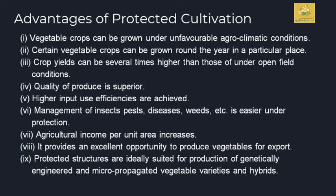Now let us see the advantages of productive cultivation. Vegetable crops can be grown under any unfavorable conditions and can be grown all year round. Crop yield will be higher than those under open field conditions. They produce superior quality produce, and higher produce efficiencies are achieved. Management of insects, pests, and disease becomes easier under productive cultivation. Agricultural income per unit area increases. It provides an excellent opportunity for producing export-quality vegetables. Productive structures are ideally suitable for genetically engineered crops as well as micro-propagated vegetable varieties and hybrids, which are more suitable in productive cultivation than in open fields.